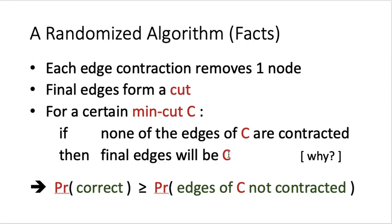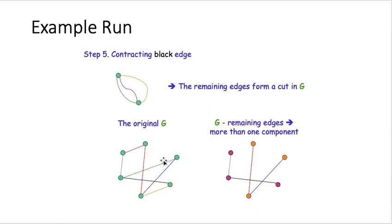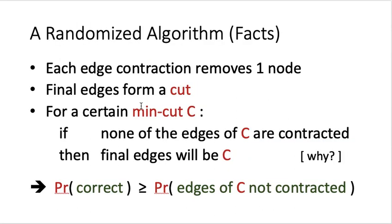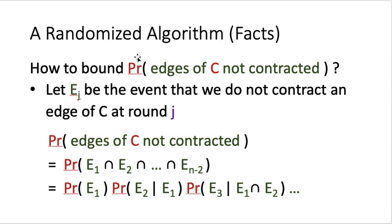Each edge contraction removes exactly one node, and the final edges output form a cut — though not necessarily a min-cut. For a certain min-cut C, if none of the edges of C are contracted, all edges of C remain until the end and are output. Since C is a min-cut, its removal disconnects the graph, so the final answer will contain exactly the edges of C. The probability of being correct is at least the probability that no edge of C is contracted.